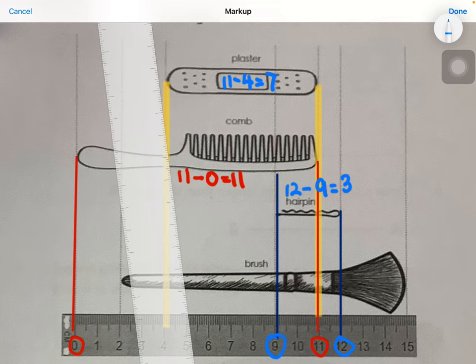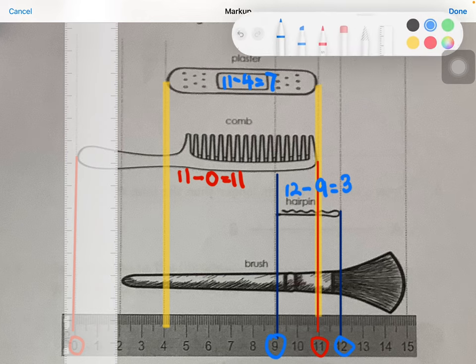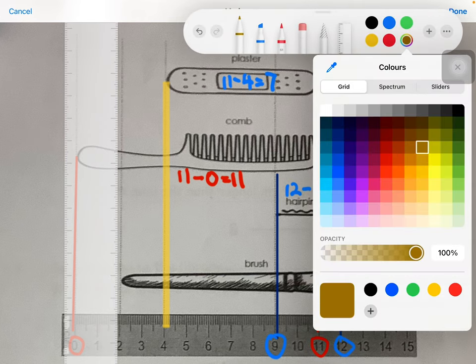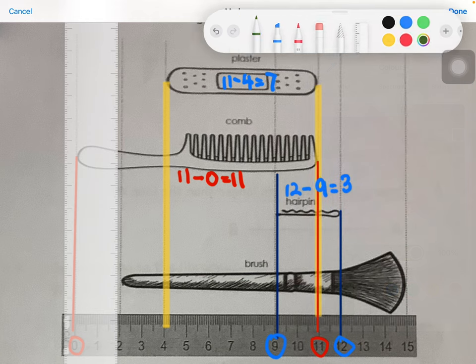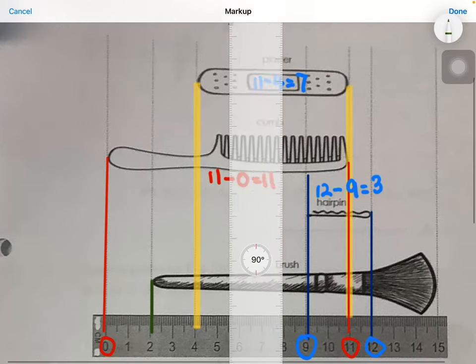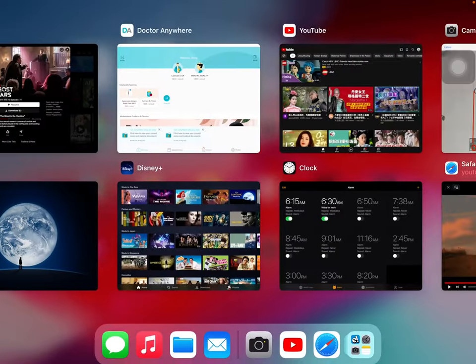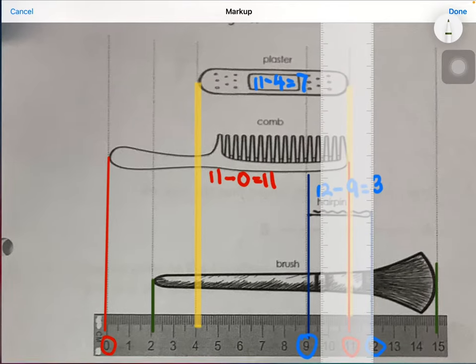Okay, and the next one is brush. What number is the starting line for brush? 2, yes, 2. And what's the ending point for brush? 15, yes.